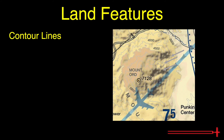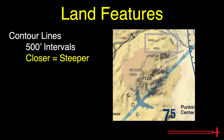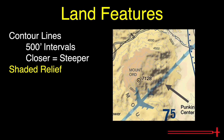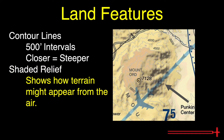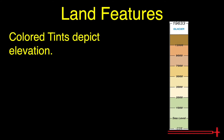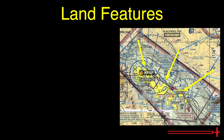Contour lines run along points of equal elevation. They are small gray lines spaced at 500-foot elevation intervals. The closer together they are, the steeper the terrain. Shaded relief, seen as shadows along the southeast side of mountains, shows how terrain might appear from the air. Different colored tints show ranges of elevation relative to sea level, ranging from light green at sea level to dark brown for elevations above 12,000 feet MSL. Notice there is no bright yellow in the elevation tints.